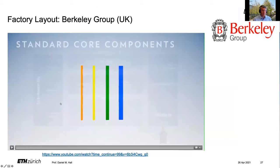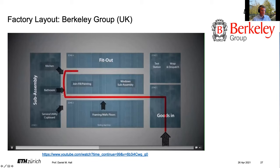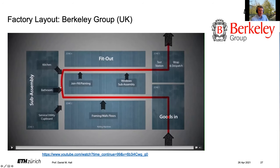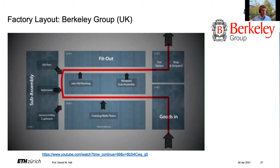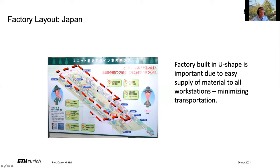We can also think about factory layout. This is from the Barclay Group in the UK — goods come in and then go to different stations: the framing station, bathroom, kitchen, painting, sub-assembly, and then a testing station that goes out. They're thinking about the optimal way of setting up within a factory environment. If your solution is going to have a single integrated factory, you should start to think about what the design of your factory setup will be. Here's another example from Japan with a U-shape, where they supply and work on the inside, with materials coming in from the outside so you don't disrupt the flow of workers and modules moving inside the building.